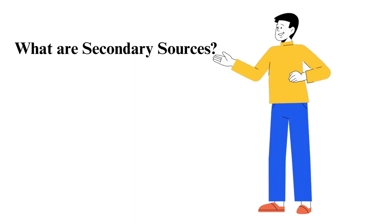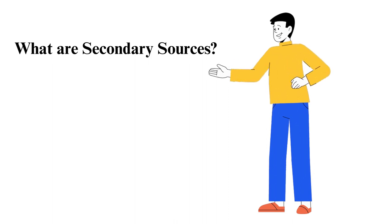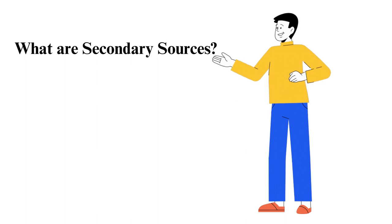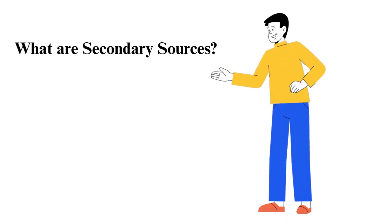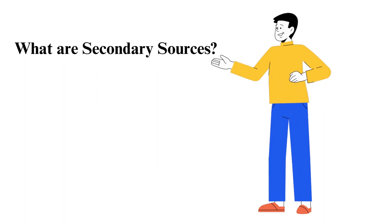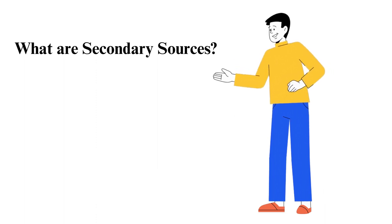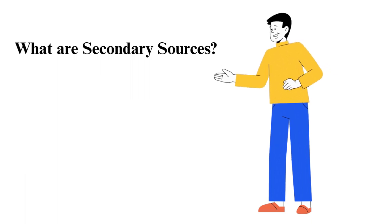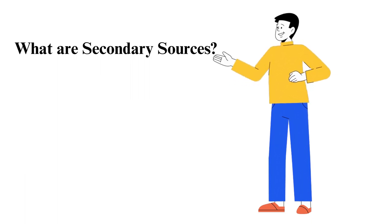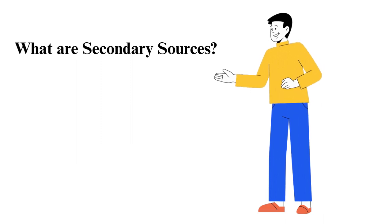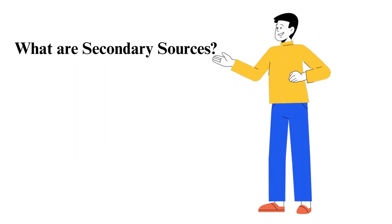What are secondary sources? A secondary source is usually information written about a primary source. These documents comment, interpret, summarize, analyze, and criticize the primary sources. Secondary sources are written by people who didn't witness the events as they occurred. These resources provide information based on the primary source and the author's interpretation. When reading an article or journal, be keen to identify its type.